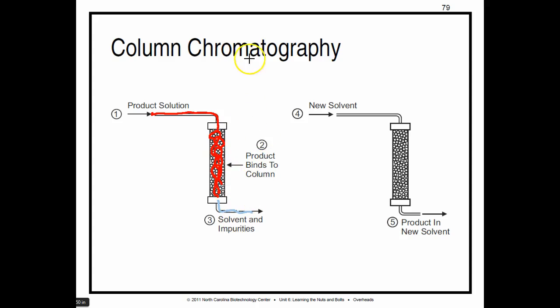Now, what we end up with here is a column that has our product, but we don't want that. We want our product. So we're going to take a brand new solvent, and we're going to bleed that solvent through the line. And when it does that, it's actually going to pick up our particles.